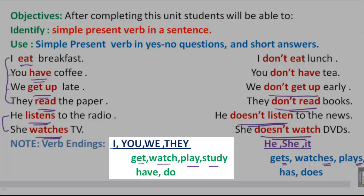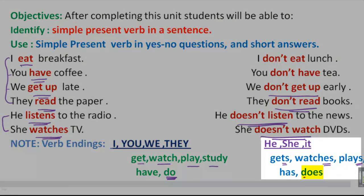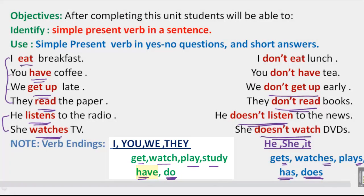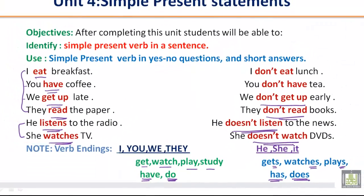Another important thing to remember: with I, you, we, and they, we use 'do'; with he, she, and it, we use 'does'. Also, with he, she, and it, we use 'has'; and with I, you, we, and they, we use 'have' — I have, you have, we have, they have. If you remember this, you will never have confusion about when to use 'do' or 'does'.